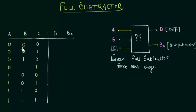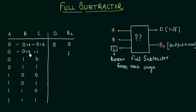0 minus 0 minus 0 gives you 0, so there is no borrow involved and the difference is 0. For 0 minus 0 minus 1, you need to subtract 1 from 0, so a borrow of 1 is required; the 0 becomes 2, and 2 minus 1 gives a difference of 1.